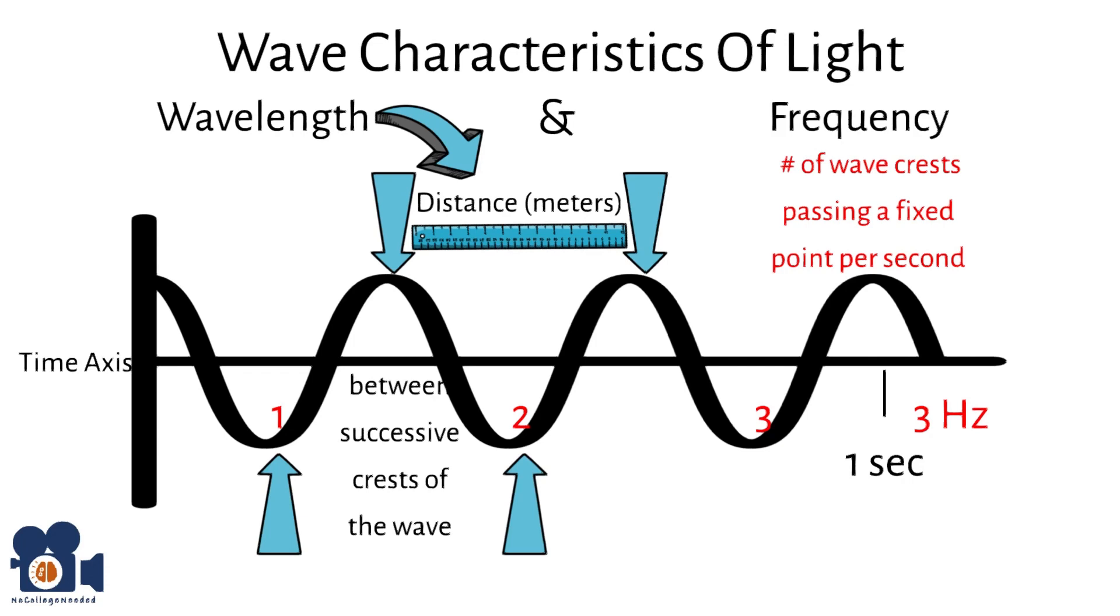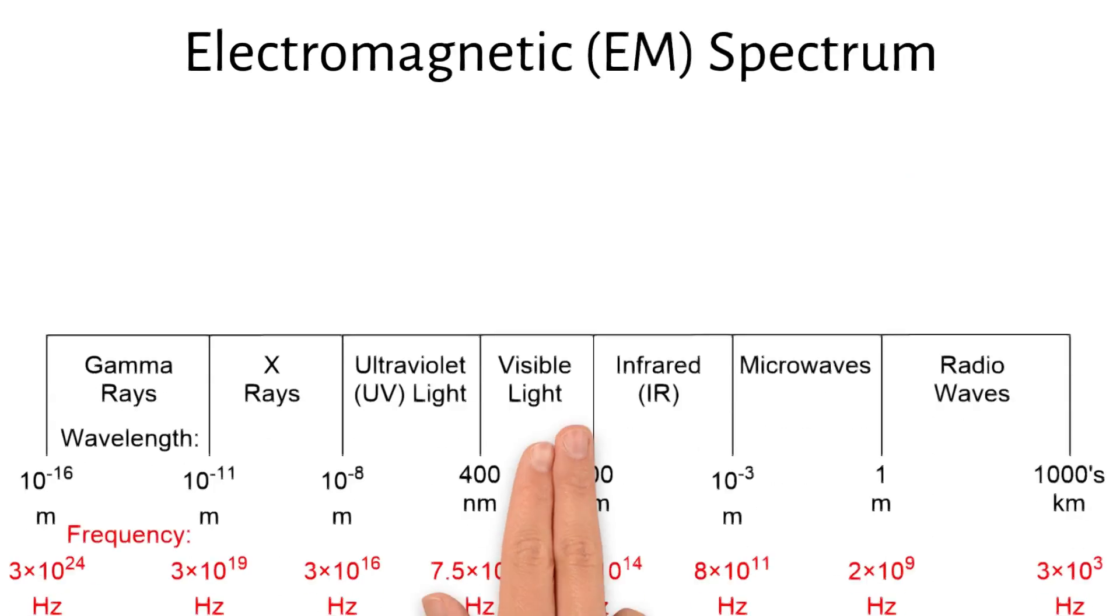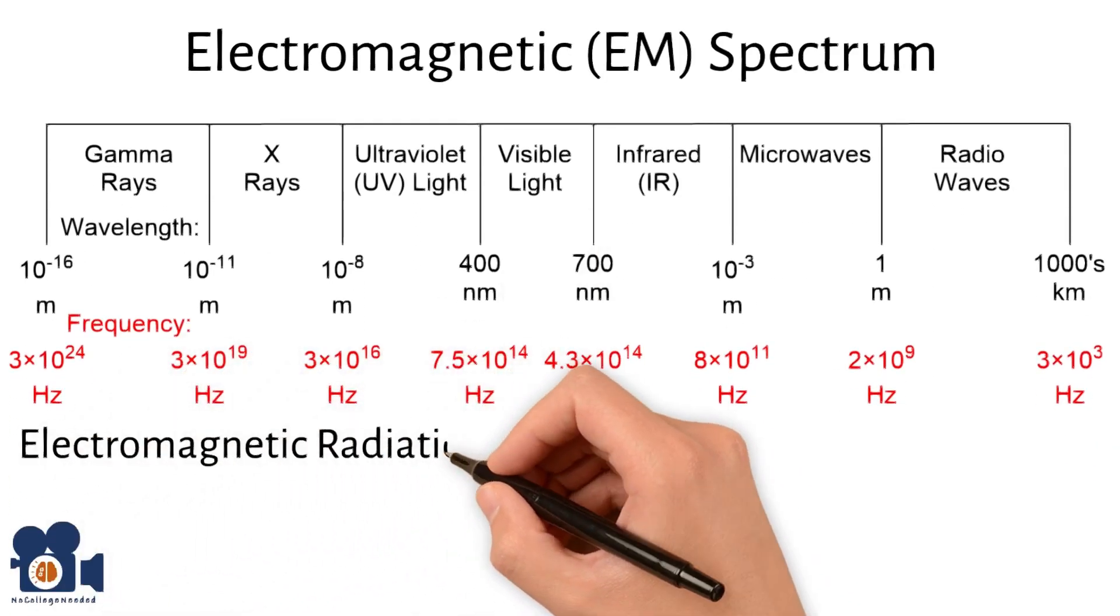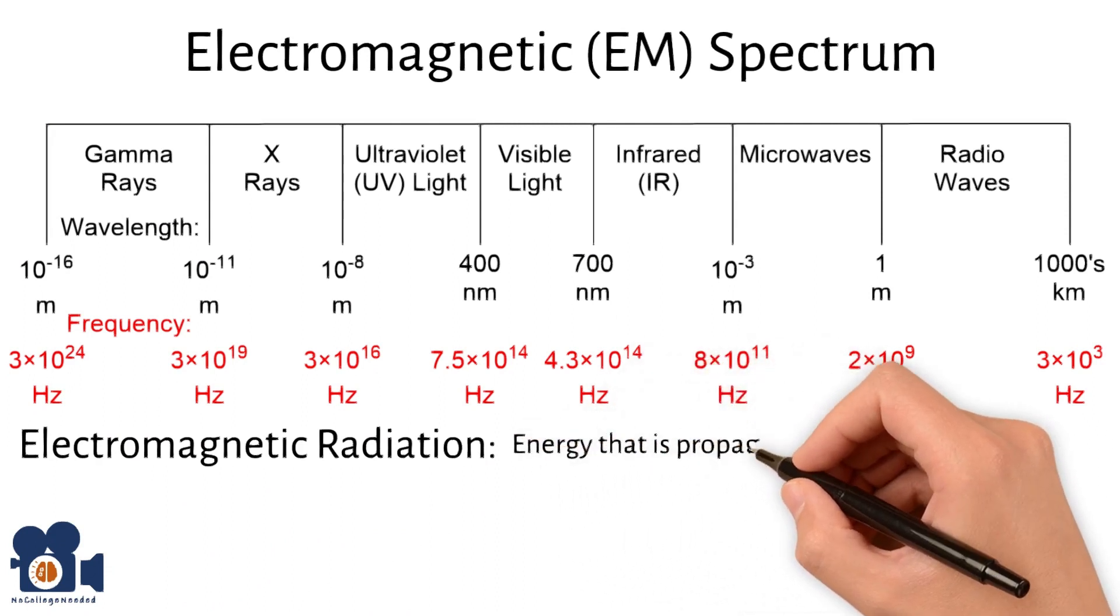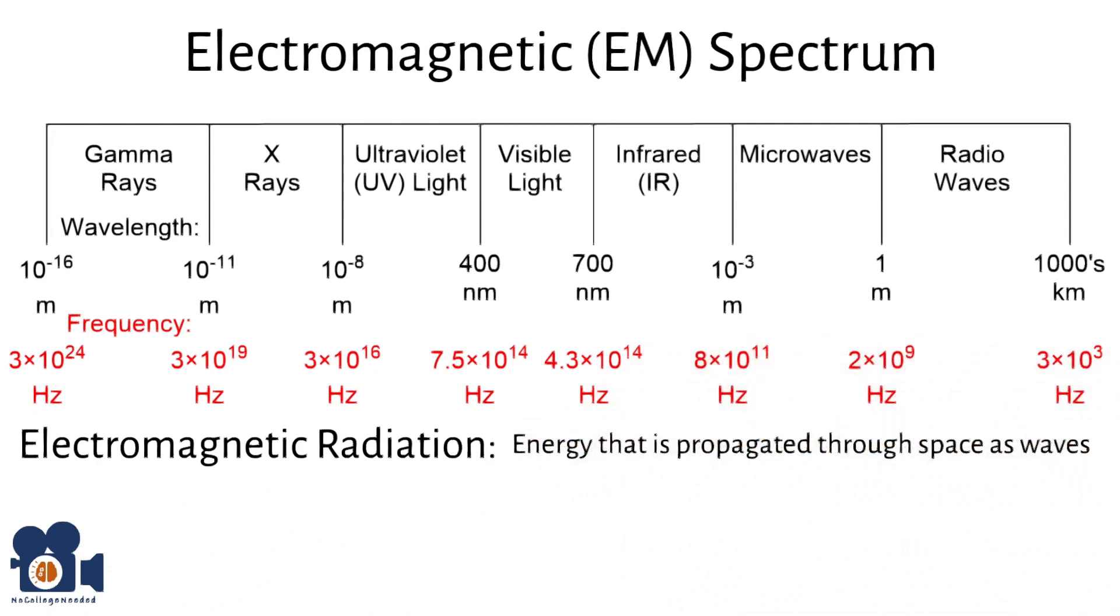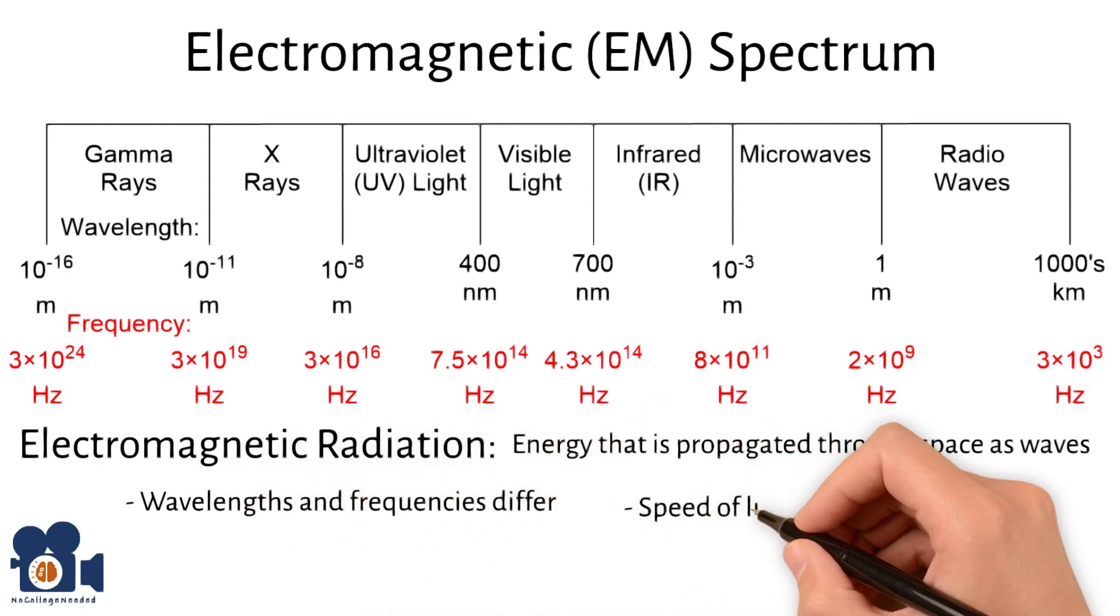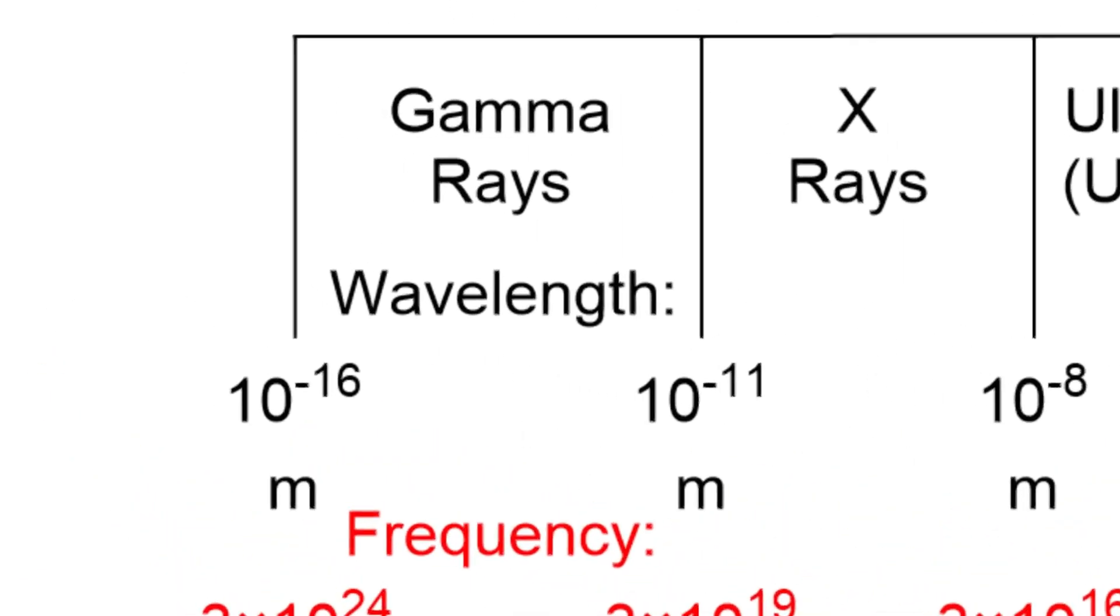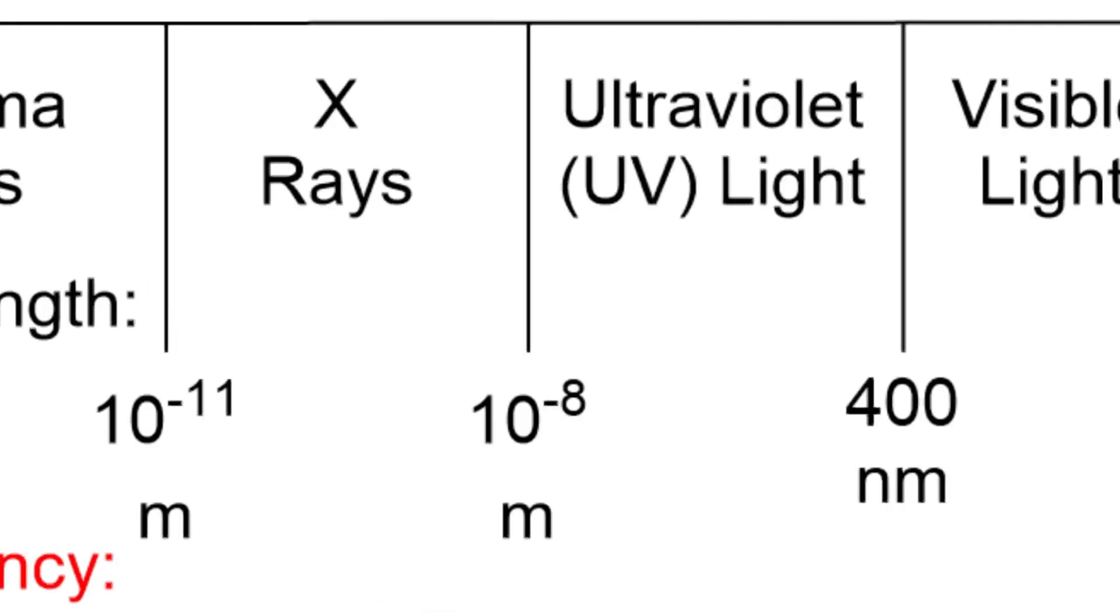This can be most clearly seen through the electromagnetic spectrum. The electromagnetic EM spectrum encompasses all types of electromagnetic radiation, which is a form of energy that is propagated through space in the form of waves, which differ from one another in their terms of wavelengths and frequencies. These waves travel at the speed of light, approximately 3 times 10 to the 8th meters per second in a vacuum.